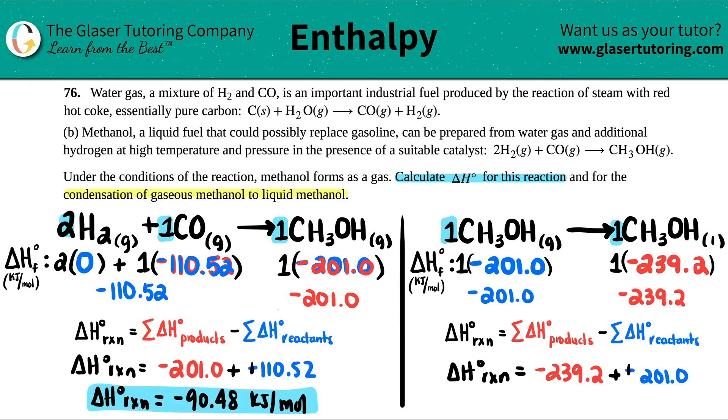And then let's just do the one on the right. Negative 239.2 plus 201, I get a delta H for the reaction of negative, so it's still exothermic, I'm releasing heat, 38.2 kilojoules per mole.